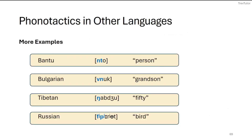Here are some examples of sounds that other languages have that English does not. In Bantu, syllables can start with 'nt.' Bulgarian allows 'vn' at the beginning, as in 'vnuk.' Tibetan allows the 'ng' sound — the velar nasal — at the beginning of a syllable, as in 'ngabju.' English has no words that start with 'ng.' In Russian, an 'fp' cluster that is also palatalized is allowed, as in a word meaning 'bird.' If you're learning one of these languages, you have to get comfortable with new syllable onsets you might not have in English or your native language.